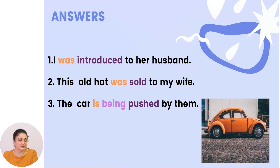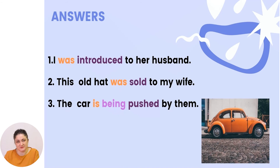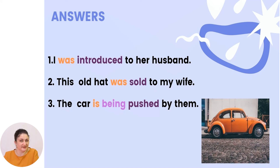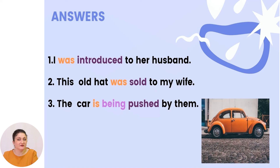So: 'I was introduced to her husband.' I suffered the action of being introduced to her husband. Number two: 'This old hat was sold to my wife.' The hat suffers the action. And number three: 'The car is being pushed by them.' They are pushing it, so the car suffers the action of being pushed.